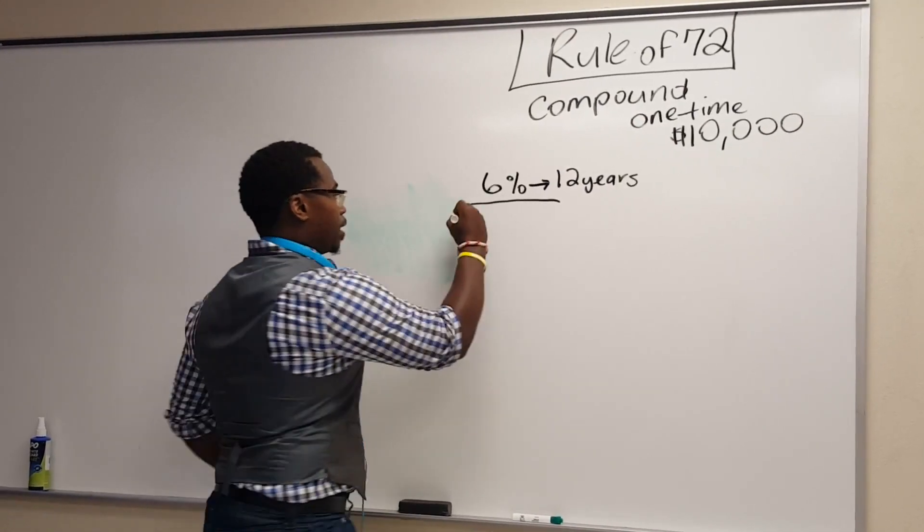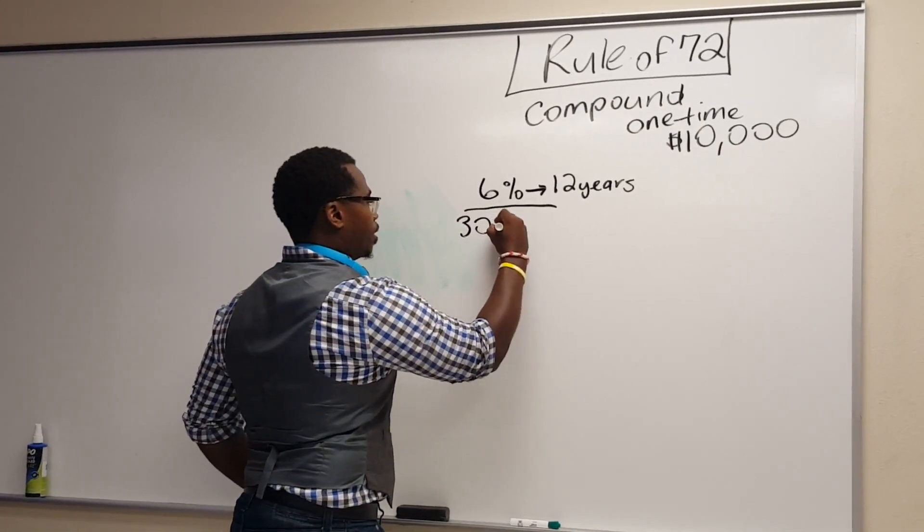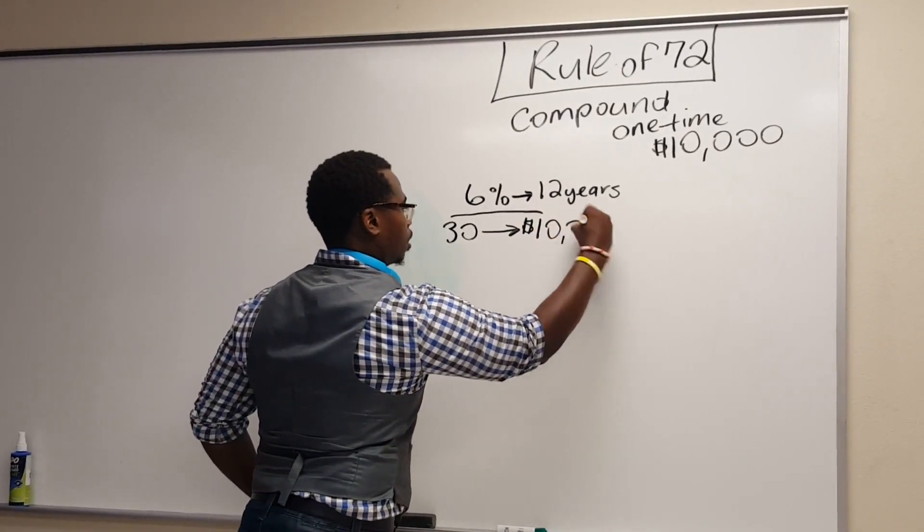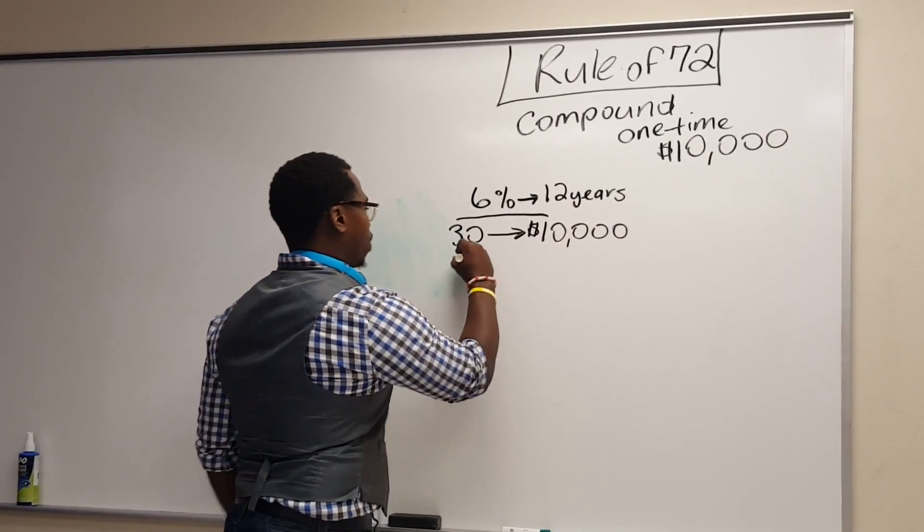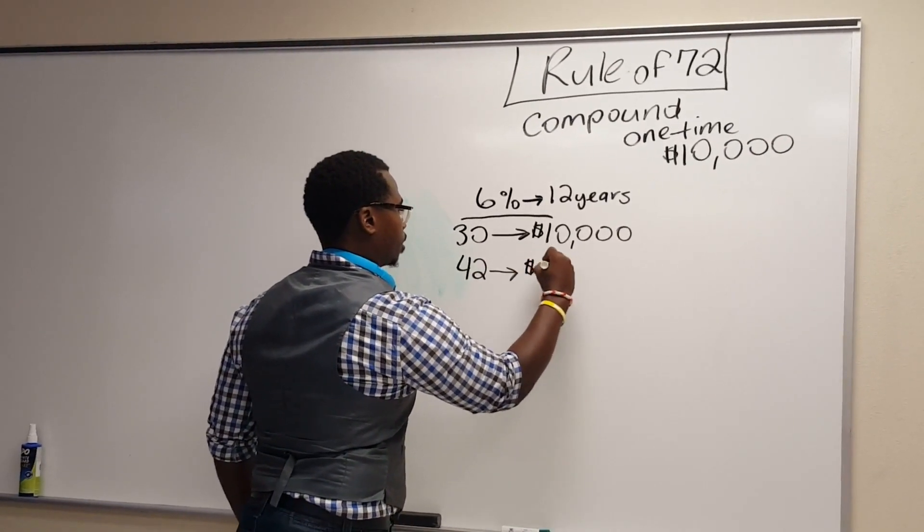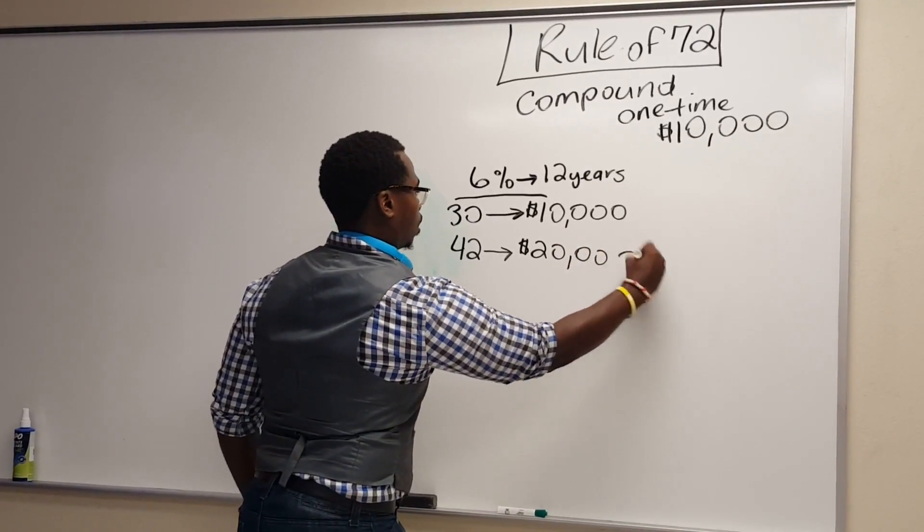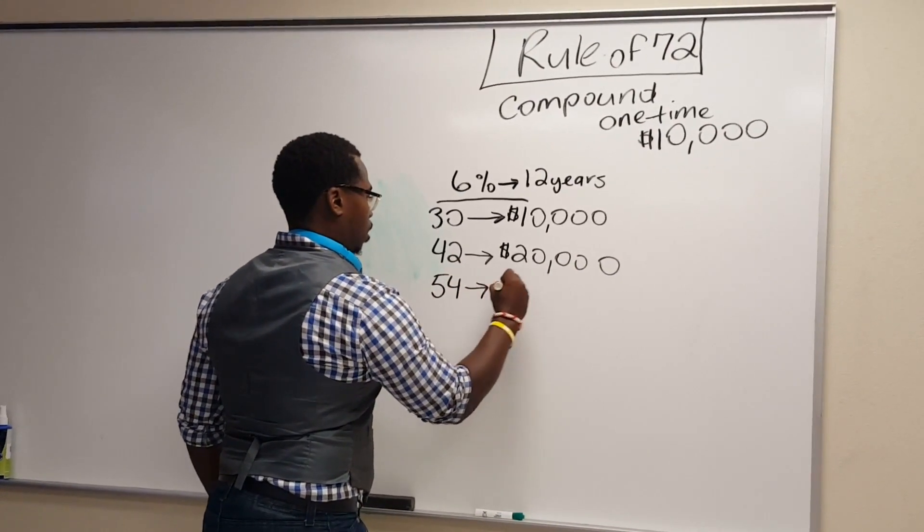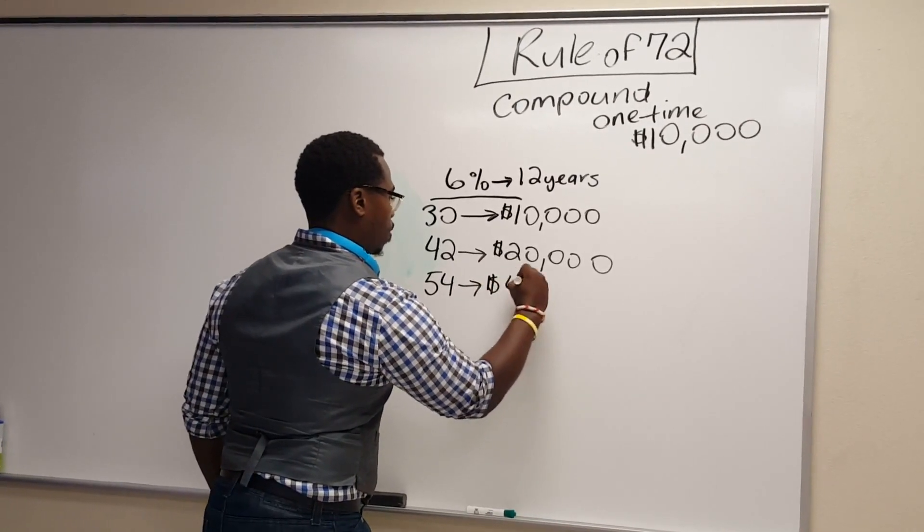So we take 72 divided by 6. Your money doubles every 12 years. At 30, you make the same one-time investment of $10,000. At 42, it grows to $20,000. At 54, it grows to $40,000.